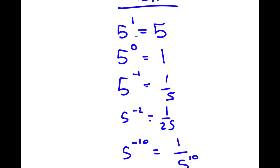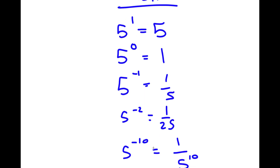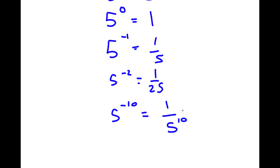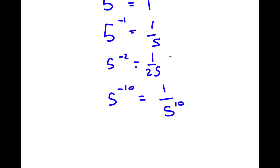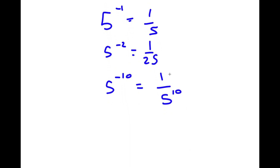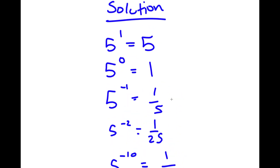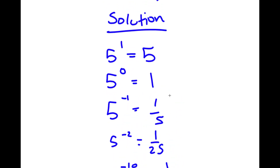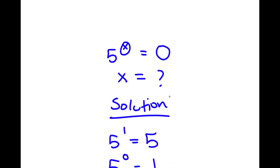As the exponent keeps decreasing, the value is approaching zero — but will it ever reach zero? Let's see if we can find a value of x that makes 5^x equal to 0.